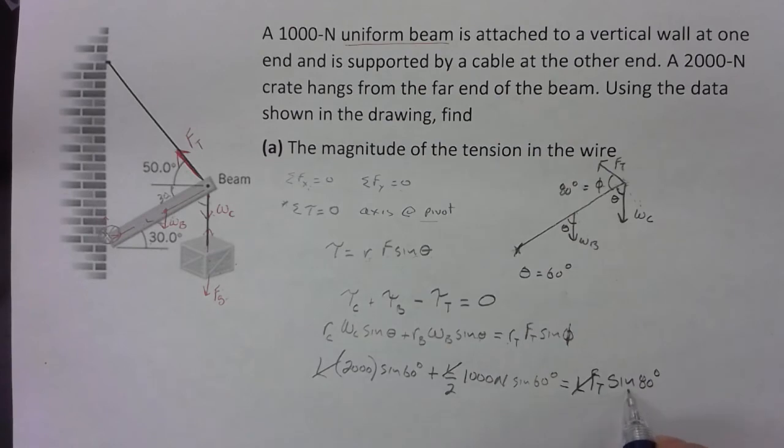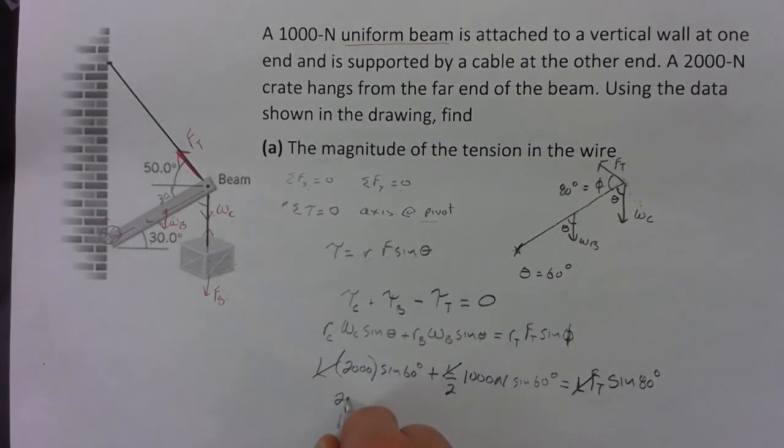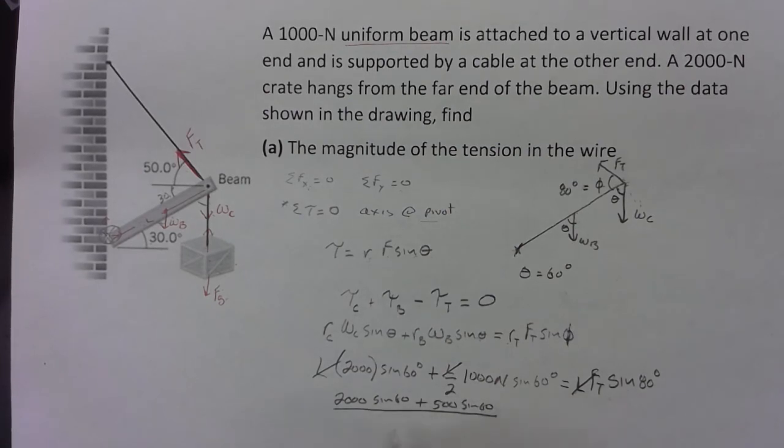So I'm just going to divide the 80 out over here. We're going to have the 2,000 times sine 60 plus the thousand over two, 500, times sine 60 divided by sine 80 is going to equal my tension.